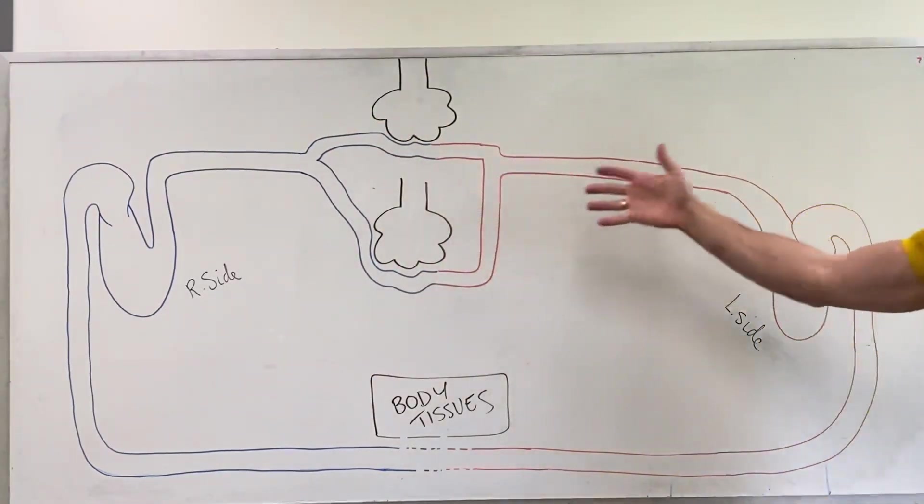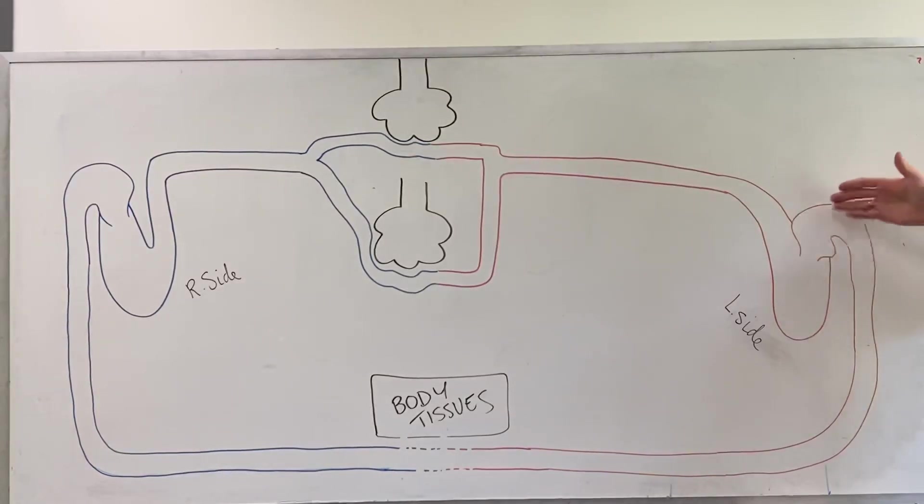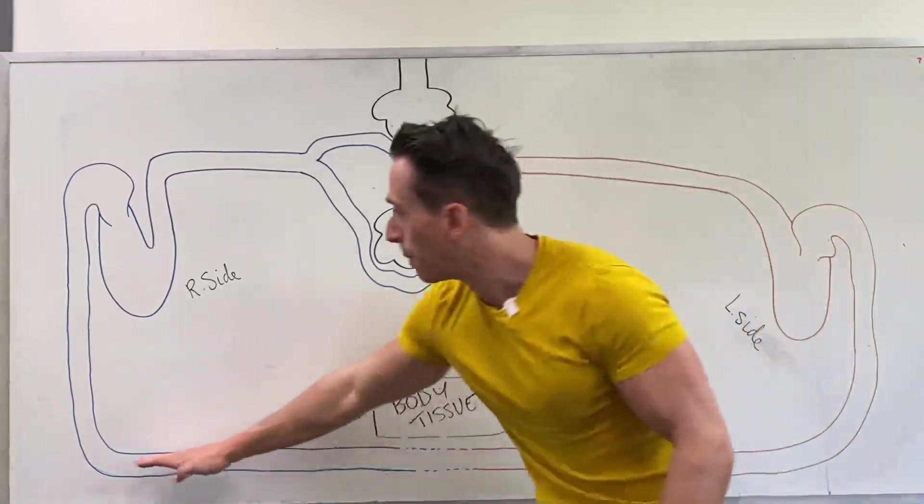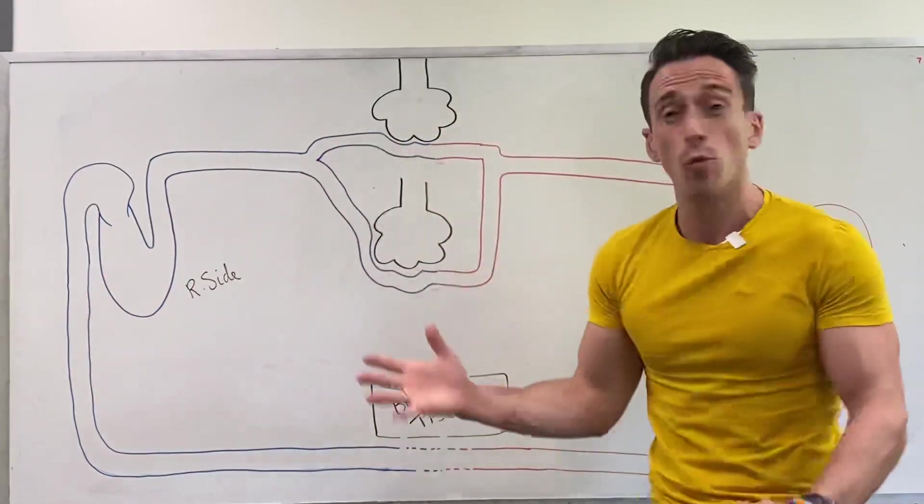Once this blood is oxygenated, it's going to go to the left hand side of the heart where it's then delivered to the tissues of the body to get that oxygen, take the carbon dioxide, bring it back to the right hand side of the heart, and the whole process begins again.